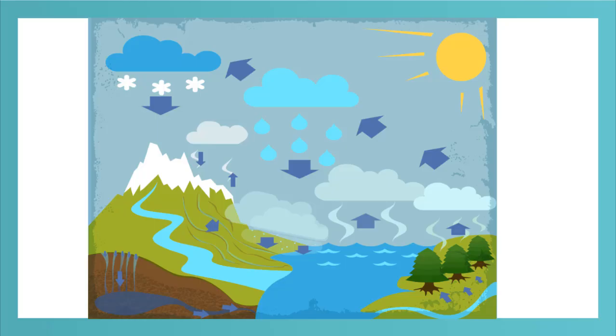In this picture, this arrow represents snow precipitation. This arrow represents rain precipitation, and this represents deposition.